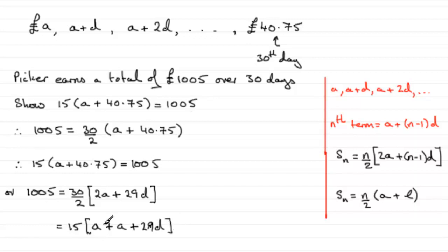Now, what is A plus 29d? Well, from the very first part, A plus 29d was equal to 40.75. If you just look back, you'll see that you wrote A plus 29d equals 40.75.